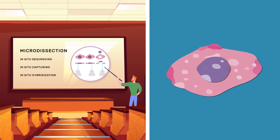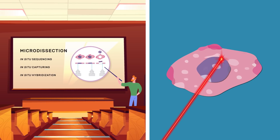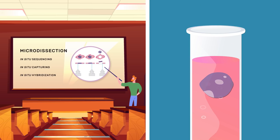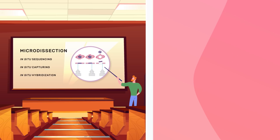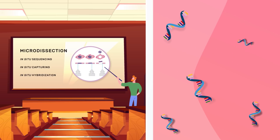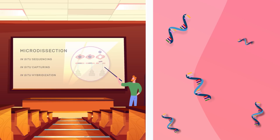Microdissection involves the excision of regions of interest from a tissue sectioned using a microscope. The isolated cells are then used for RNA extraction and gene expression profiling. Even though this technique provides a high degree of flexibility, it remains laborious.